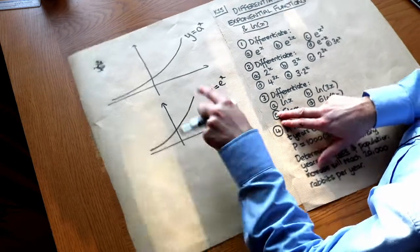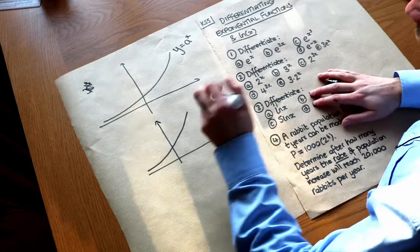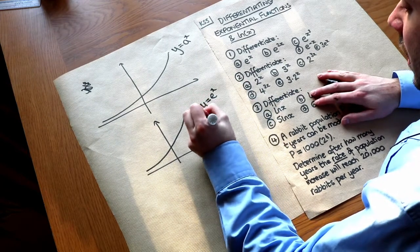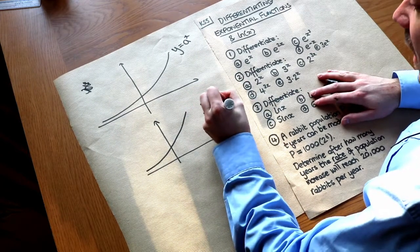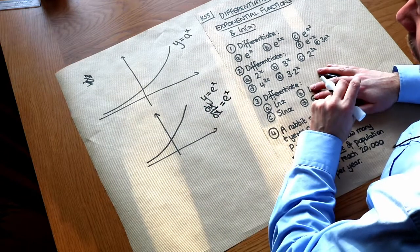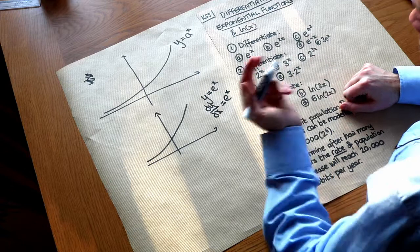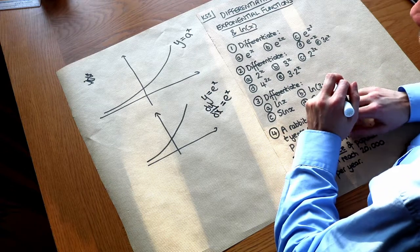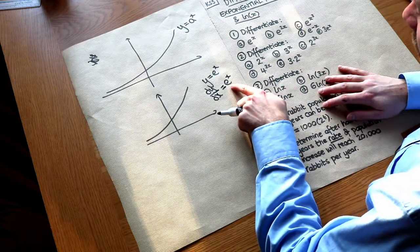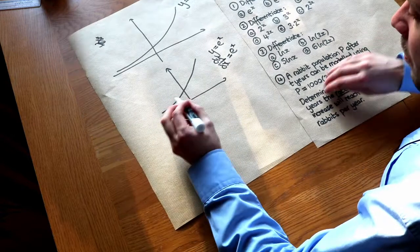Now e has a special property that when you differentiate e to the x, it becomes e to the x. So it actually becomes itself. So it's the only expression that when you differentiate it, it becomes just itself. It doesn't change at all. Now we might wonder what happens if this base is something other than e and that's a bit more complicated.